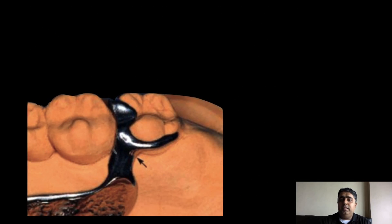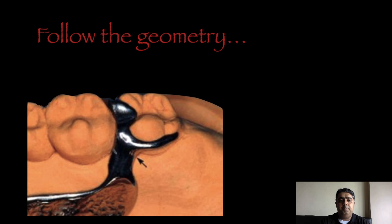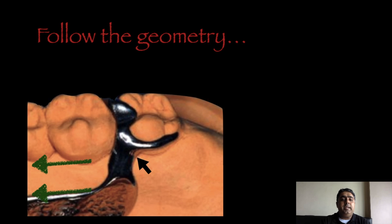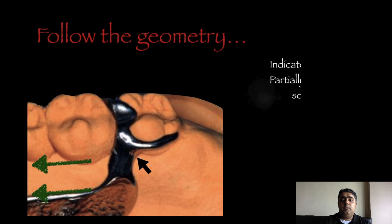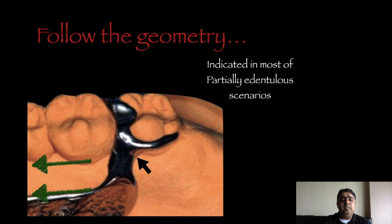Moving ahead with the geometry which needs to be followed in the AP strap: where the major connector is nearly confluent to the minor connector, it needs to cross the gingival margin abruptly — that is, at 90 degrees — and the lateral border of the major connector needs to be absolutely parallel to the gingival line of the remaining abutment teeth. As we can see, all these features actually make this particular major connector more universal in nature.